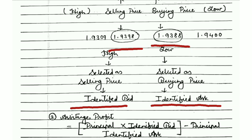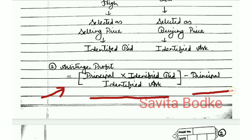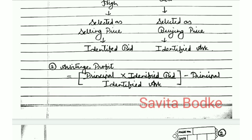Now we move to the formula for arbitrage profit. The formula is: Arbitrage Profit = (Principal × Identified Bid / Identified Ask) − Principal. We put the first part in brackets: (Principal × Identified Bid / Identified Ask) − Principal. This formula we have to remember.